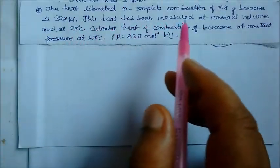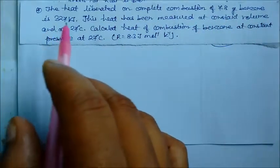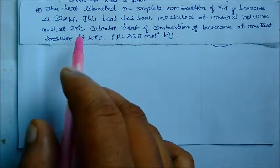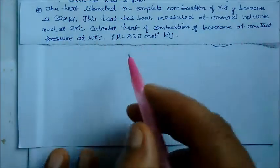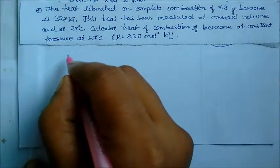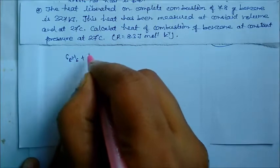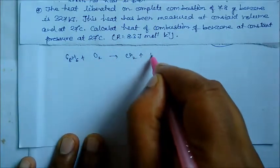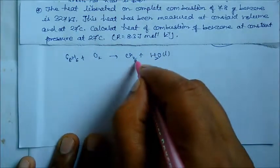The heat liberated on complete combustion of 7.8 grams of benzene is 327 kilojoule, measured at constant volume at 27 degree centigrade. Calculate the heat of combustion of benzene at constant pressure at 27 degree centigrade. R is given. The equation is: C₆H₆ (liquid) plus oxygen (gas) gives CO₂ (gas) plus H₂O (liquid).